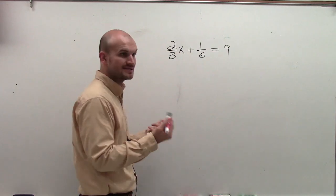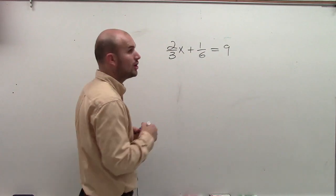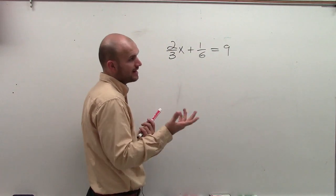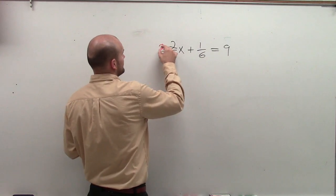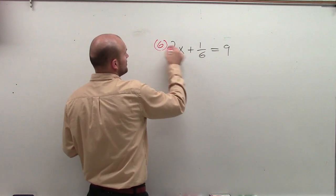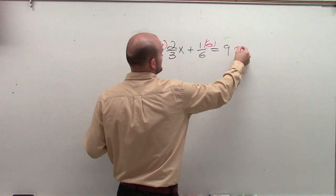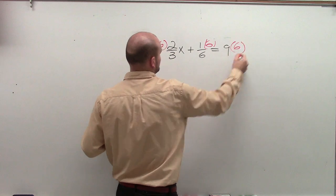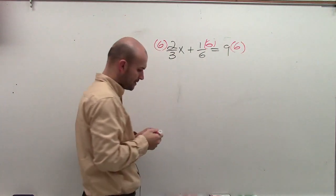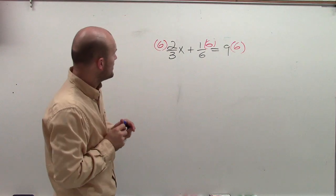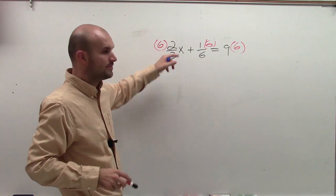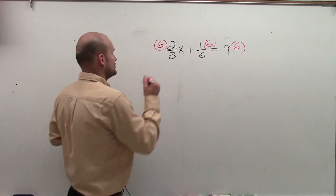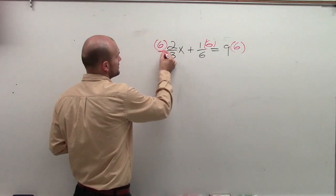6, right? Because that's the least common multiple, or we might call it the least common denominator. So I'm going to multiply every term times 6. And remember, when multiplying a whole number times a fraction, you can do it a couple of ways.